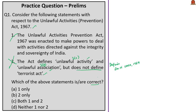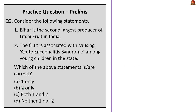Moving on to the next question about two statements regarding lychee. The first statement says Bihar is the second largest producer of lychee fruit in India — this is wrong because Bihar is the top producer in the country. The second statement is correct as children below 15 years of age are predominantly affected by the intake of lychee fruit due to the toxins present. Since only statement 2 is correct, the answer is option B. The third question asks which disease the toxins hypoglycine A and methylene cyclopropylglycine of lychee fruit are associated with — the answer is acute encephalitis syndrome.